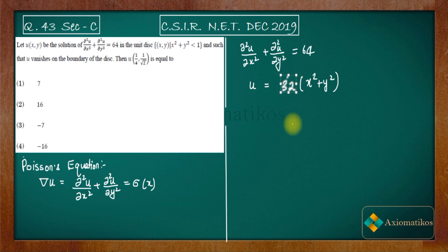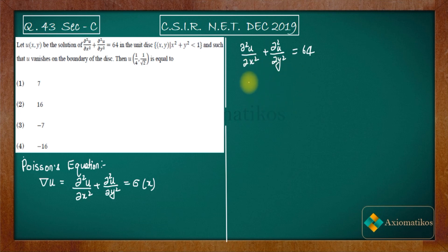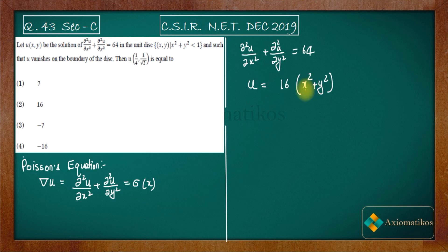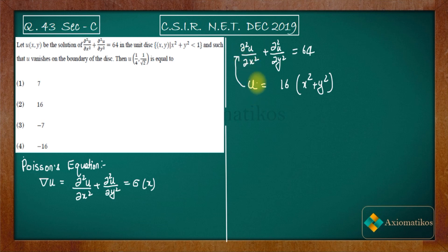Instead of 32, we should use 16. With u = 16(x² + y²): differentiating twice with respect to x gives 32, and differentiating twice with respect to y gives 32 as well — summing to 64. So this function satisfies the differential equation.